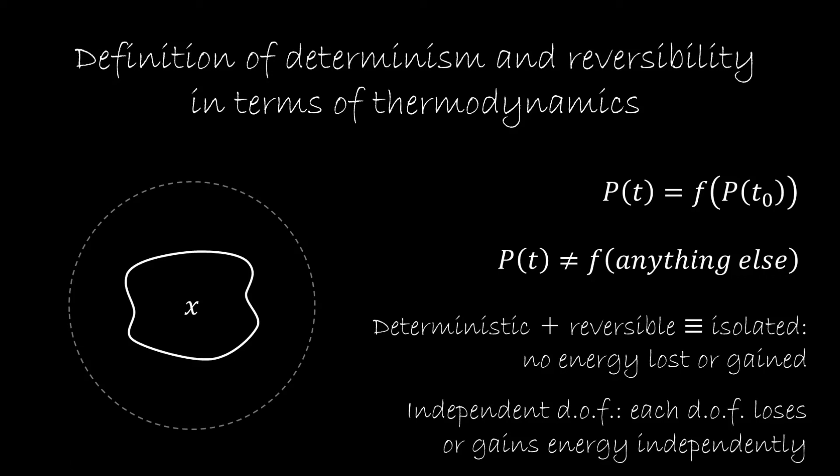For each independent degree of freedom, we assume that the amount of energy lost or gained by each degree of freedom while we're moving across our trajectory can be calculated independently so that the total of the energy is going to be the sum of the energy lost or gained for each degree of freedom separately.